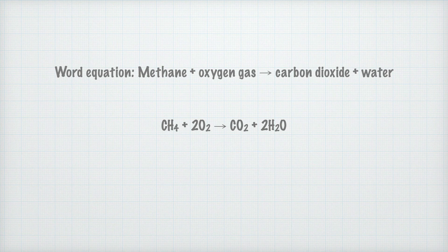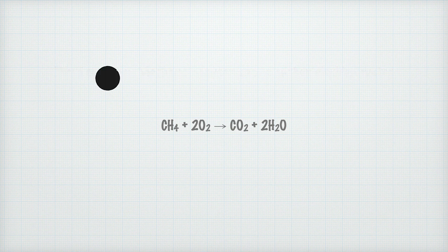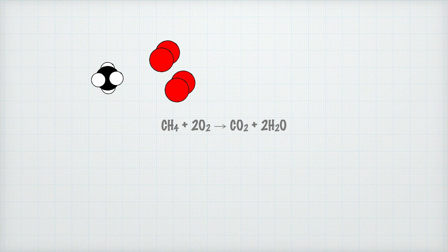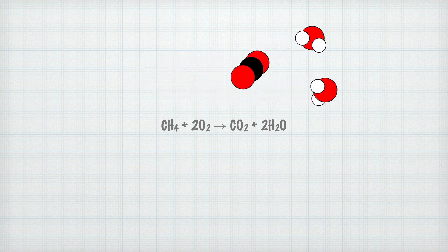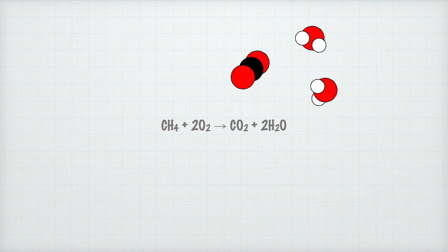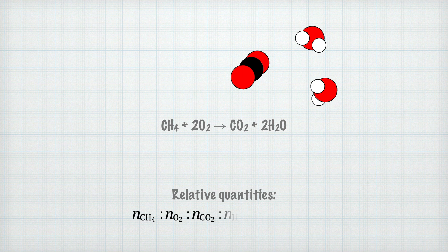Let's see a small animation so you can see more clearly what reacts and what forms. We start with a methane molecule and two oxygen molecules — that's what 2O₂ means. Note that nothing disappears or appears: every atom is still there after the reaction. One carbon dioxide molecule and two water molecules are formed. The relative quantities are: the amount of methane is related to oxygen, carbon dioxide, and water as 1 to 2 to 1 to 2.